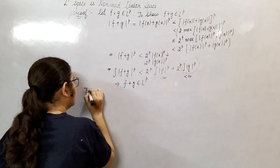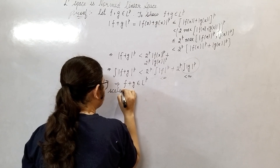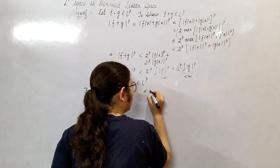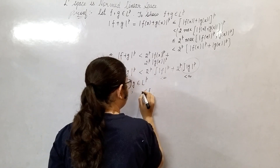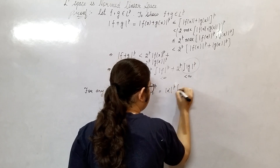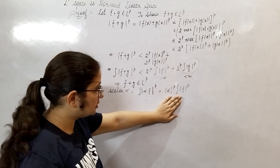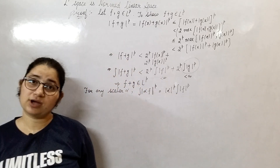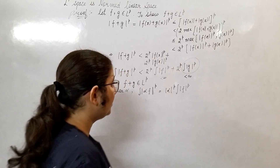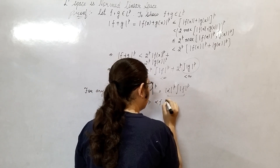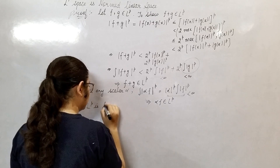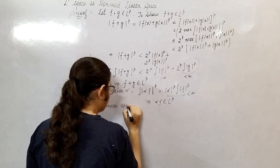Now, for any scalar alpha, we have the integral of |αf|^p equals |α|^p times the integral of |f|^p. This is also finite, because whenever you pick your alpha, that alpha will be a finite number — even if you choose alpha equals one crore, that is still finite, not infinite. So this implies alpha·f belongs to LP. Therefore, LP space is a linear space.